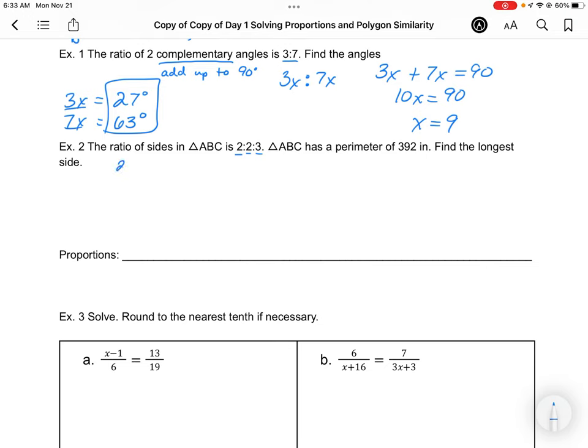I'm going to rewrite it as 2x, 2x, and 3x. Instead of writing it as a ratio, I'm going to write it as my equation because those represent sides and the perimeter is the sum of those sides. So 2x plus 2x plus 3x equals that given perimeter of 392.